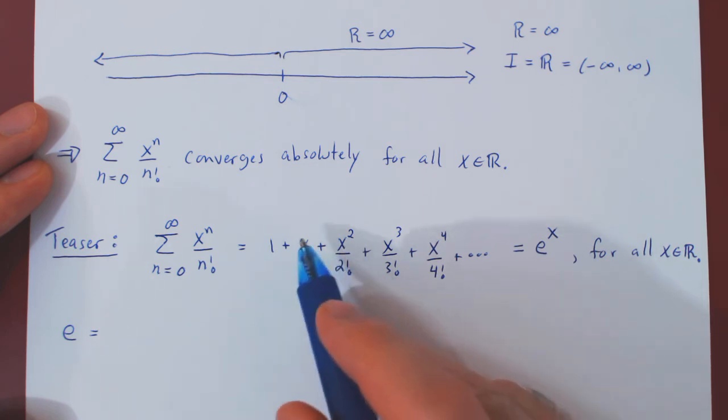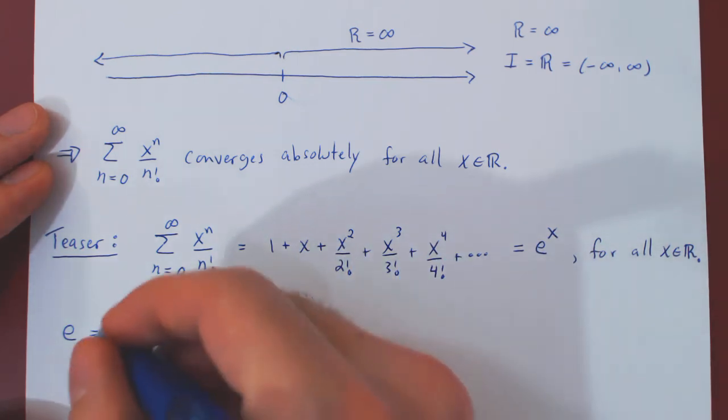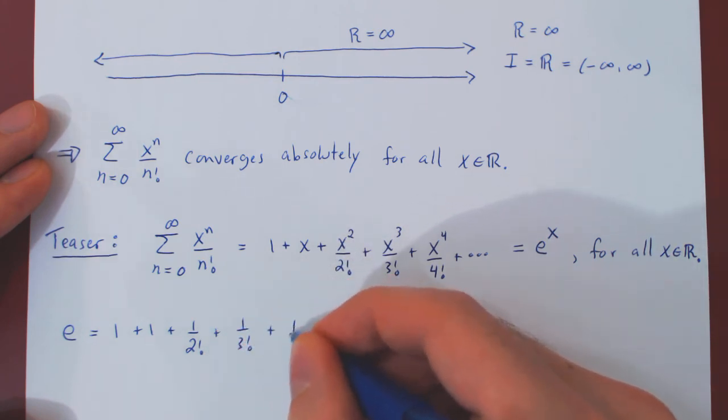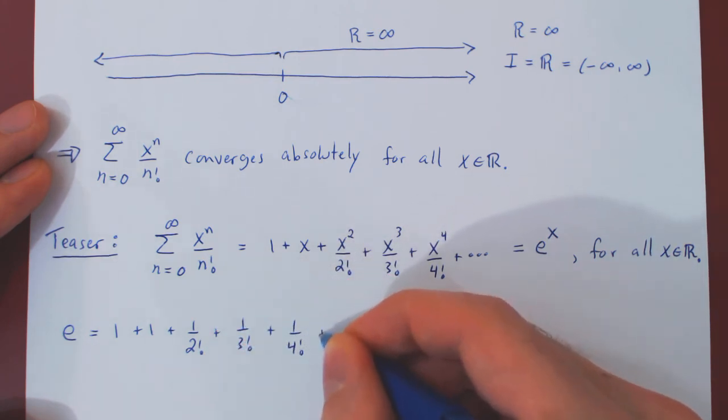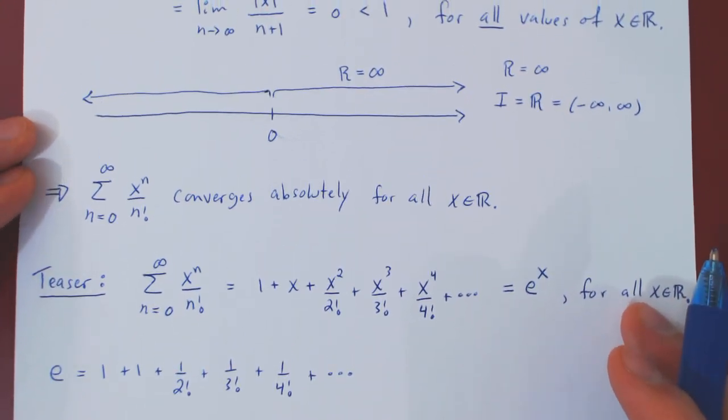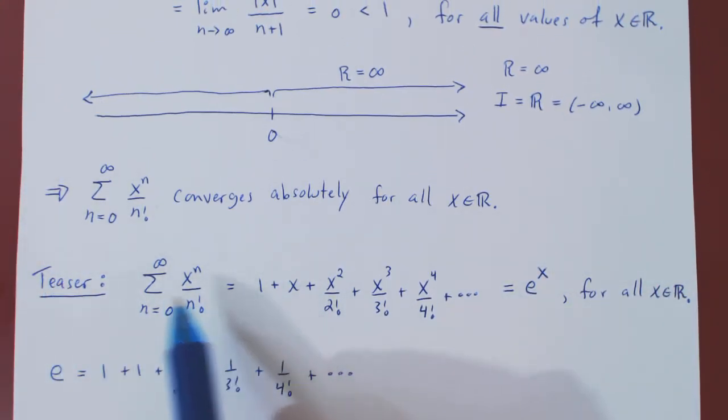So you will get, if you replace x by 1, 1 to any power is simply 1, and you will have that e is the infinite series 1 plus 1, plus 1 over 2 factorial, plus 1 over 3 factorial, plus 1 over 4 factorial, and so forth. The more of these terms you add, the better your approximation will be to the number e. So try this out with your calculator. You can go up to, say, 1 over 15 factorial, and you will have a very good approximation to e. And as I've said, this is a teaser, as at this point this is far from obvious, but later on in the course, we will prove that this is indeed the case.